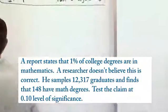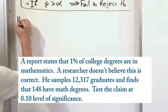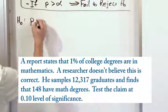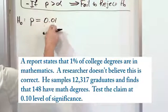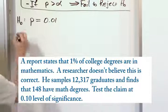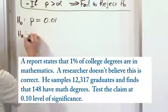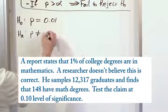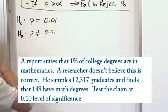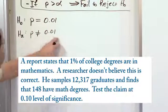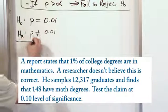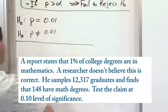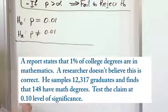When we write our null hypothesis down, the population proportion is p = 0.01 because this is 1%. The alternate hypothesis would then be that we don't actually have 1% of college degrees being mathematics. This is what the researcher believes. The only real difference is because we have a not equals here, it's a two-tailed test.